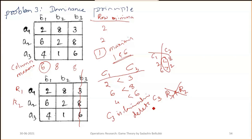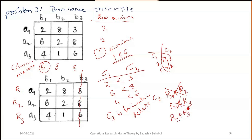Next, compare R1 and R3: 2 is less than 4 but 8 is greater than 1, so we cannot compare R1 and R3 either. The remaining option is to compare R2 and R3.